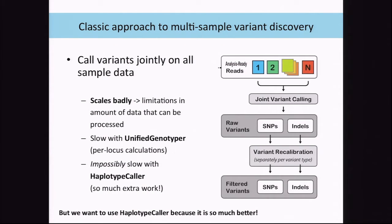Typically with Unified Genotyper, we could do joint calling and did it successfully at large scale up to around 20,000 samples. But we were really hitting technical limits because to do it in Unified Genotyper style, you have to load all 20,000 BAMs simultaneously into memory and do comparisons across them, which gets very costly very quickly. With the Haplotype Caller, which is a much better but more complicated and more expensive algorithm, we just couldn't do that with large sample sets.